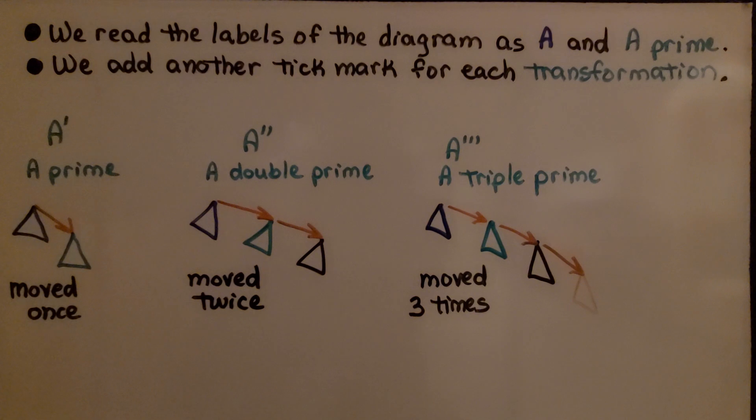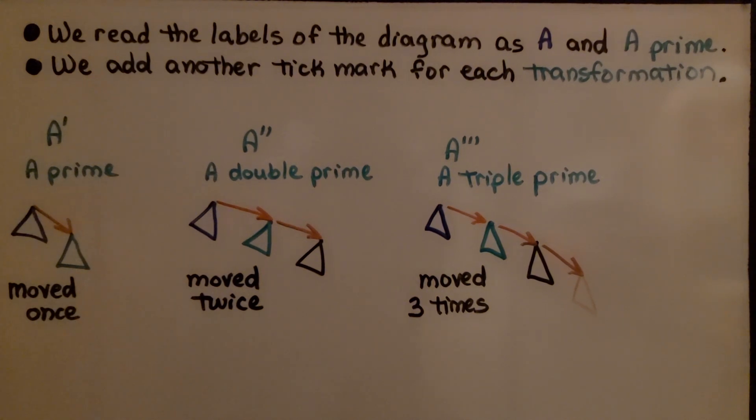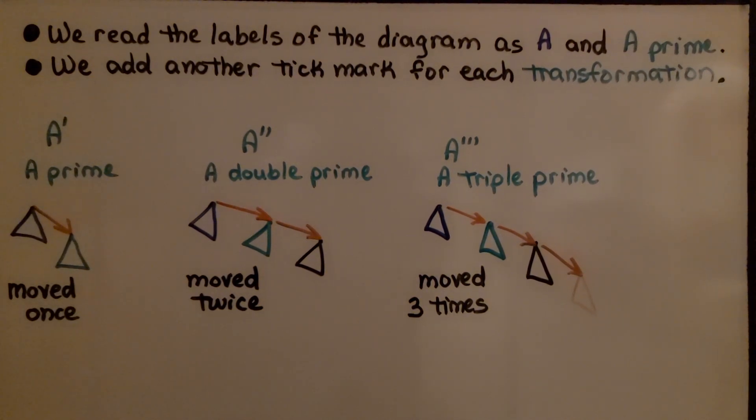We read the labels of the diagram as A and A prime. We add another tick mark for each transformation. If we have our blue triangle and it moves,